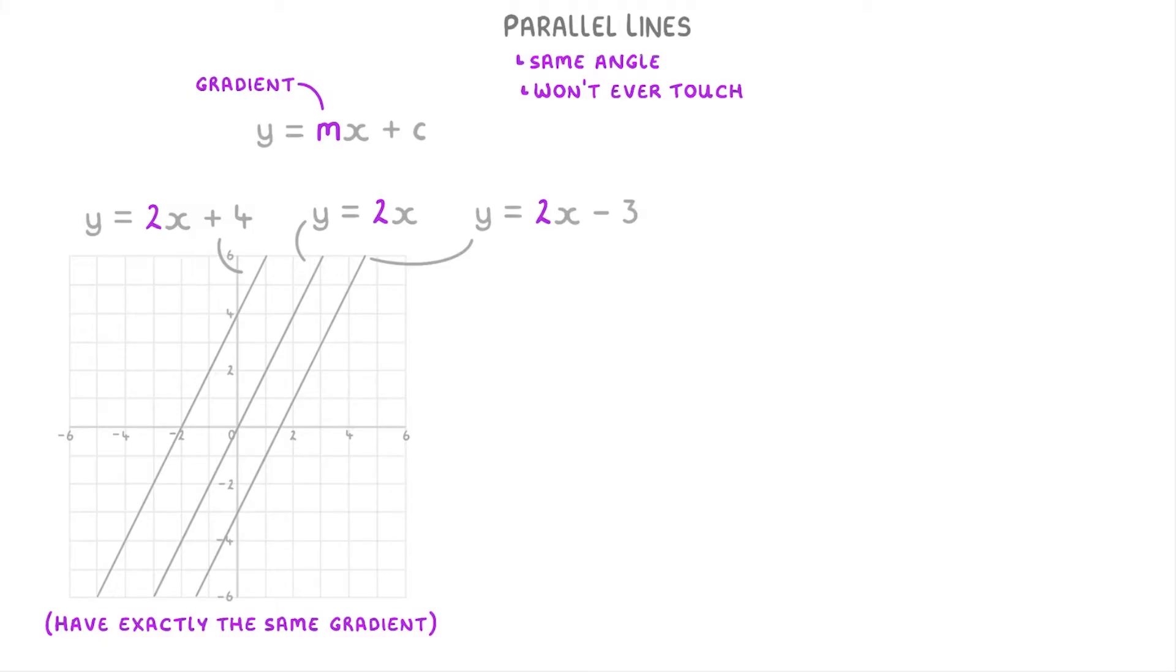For example, if we had the equation 3y equals 2x minus 9, the number in front of the x is a 2. So you might think at first that the gradient is 2 and is parallel to our other lines.